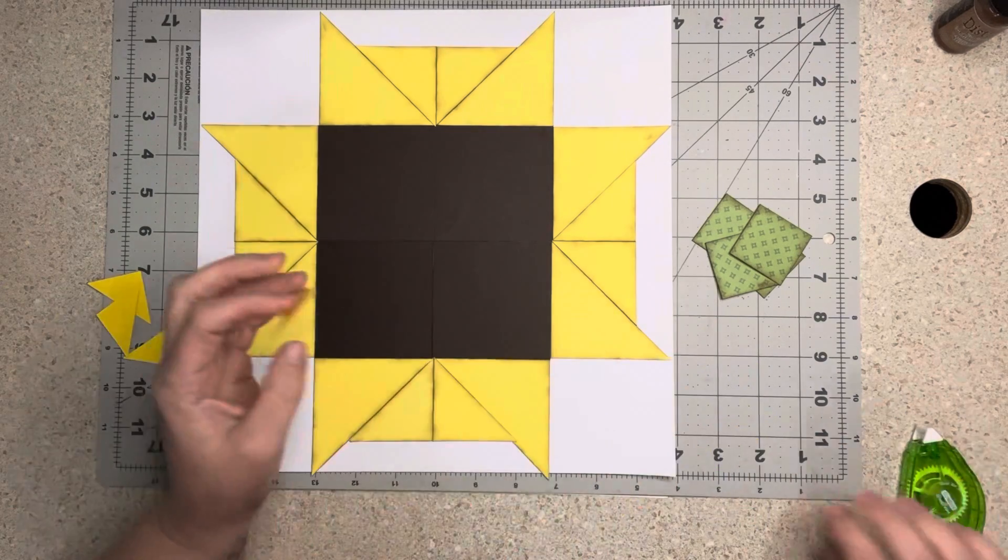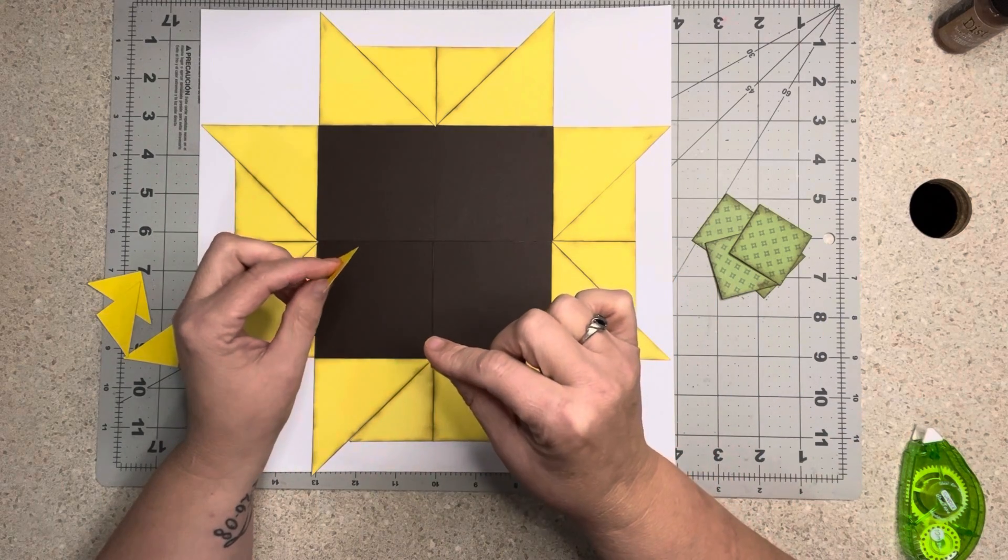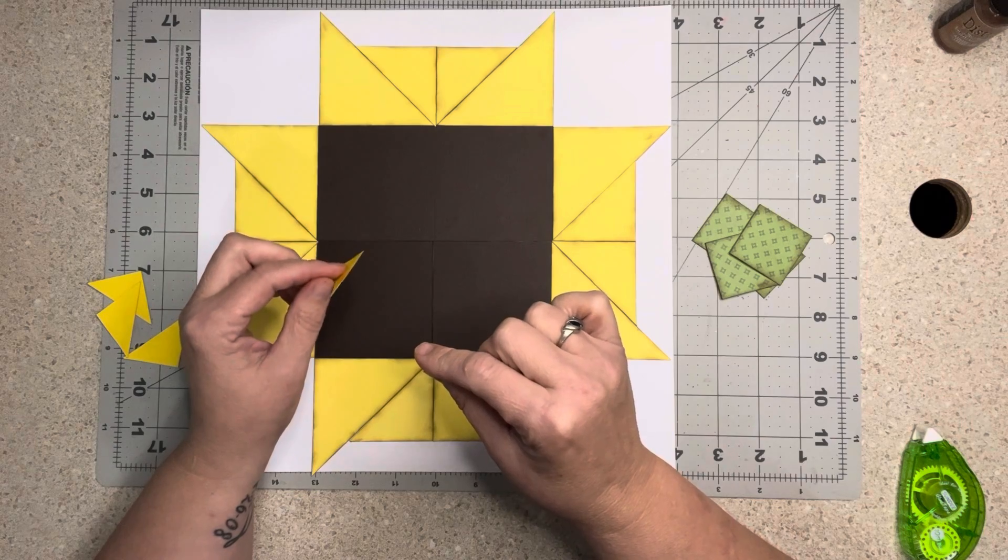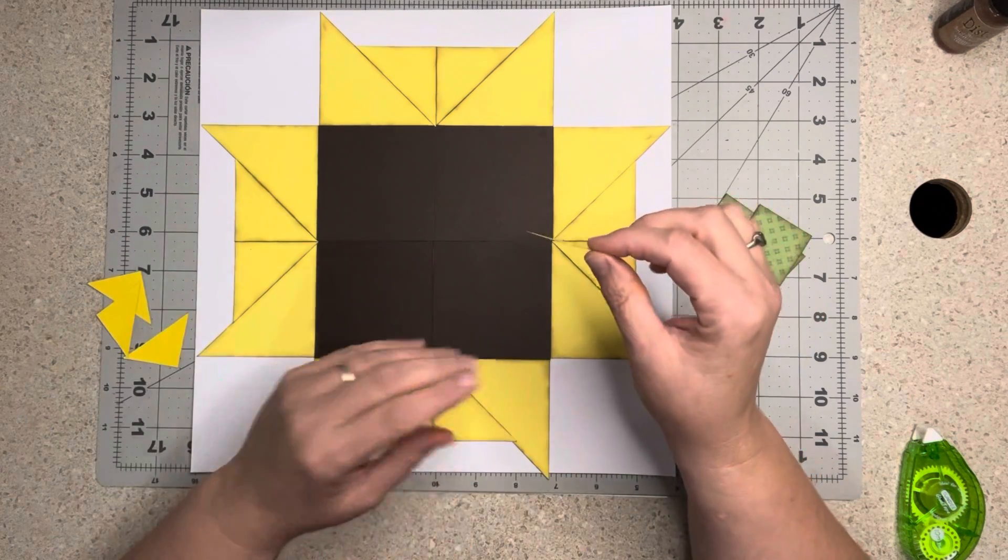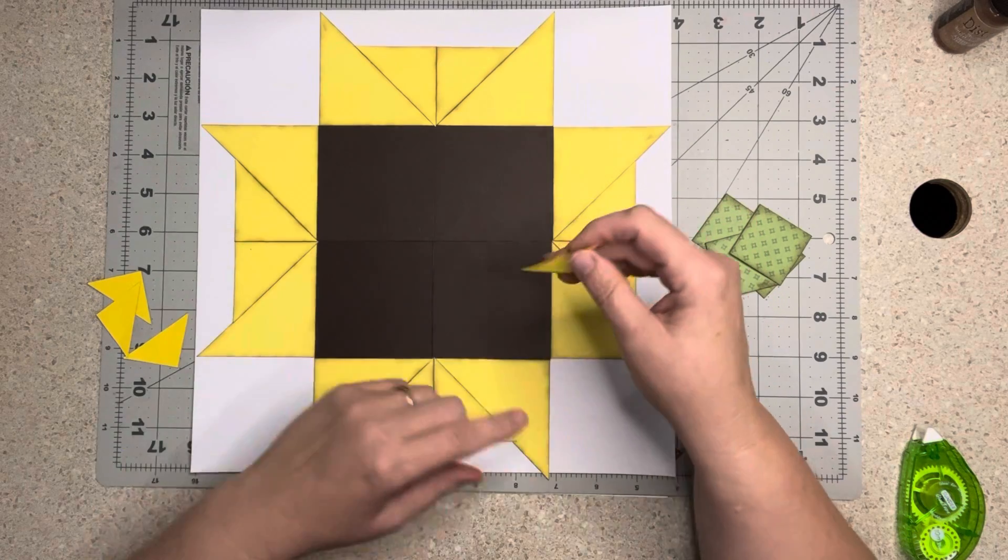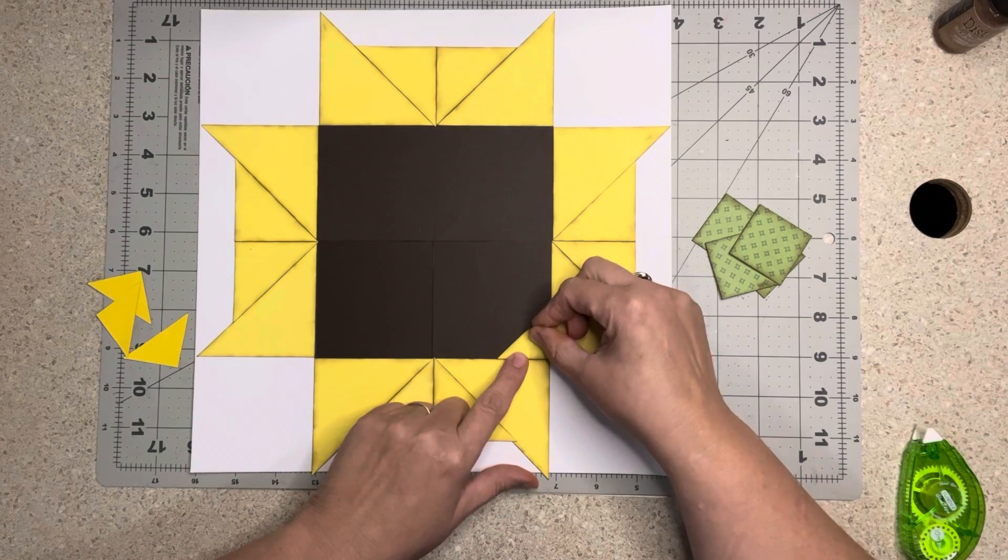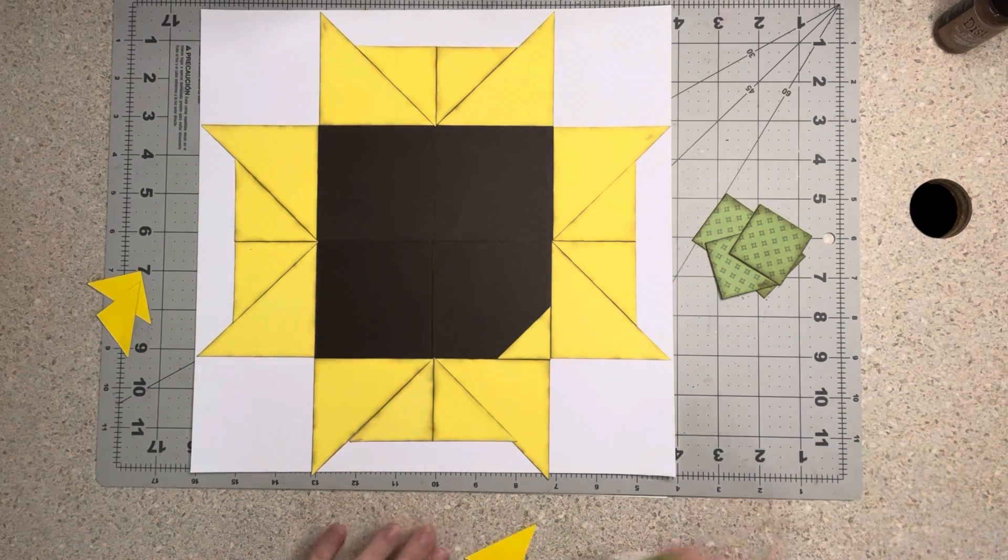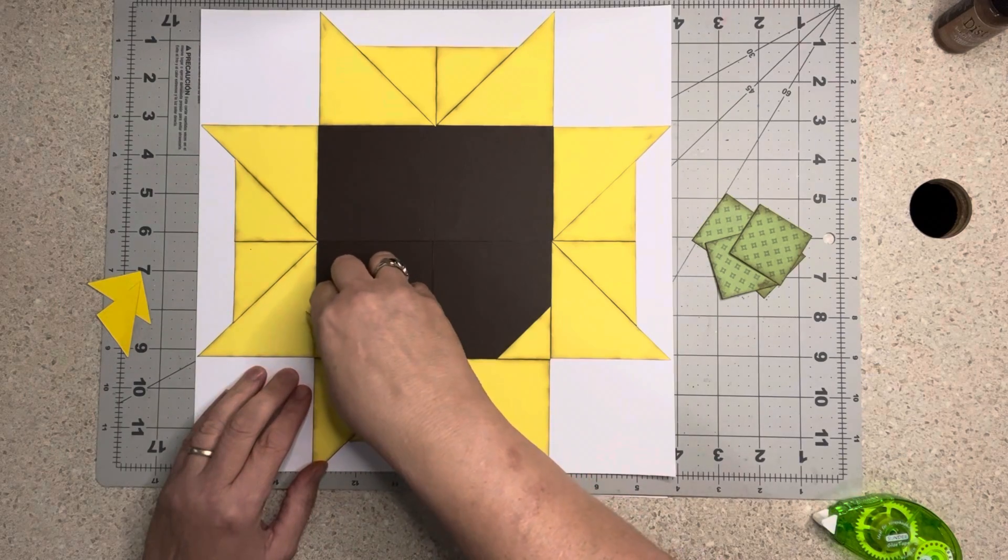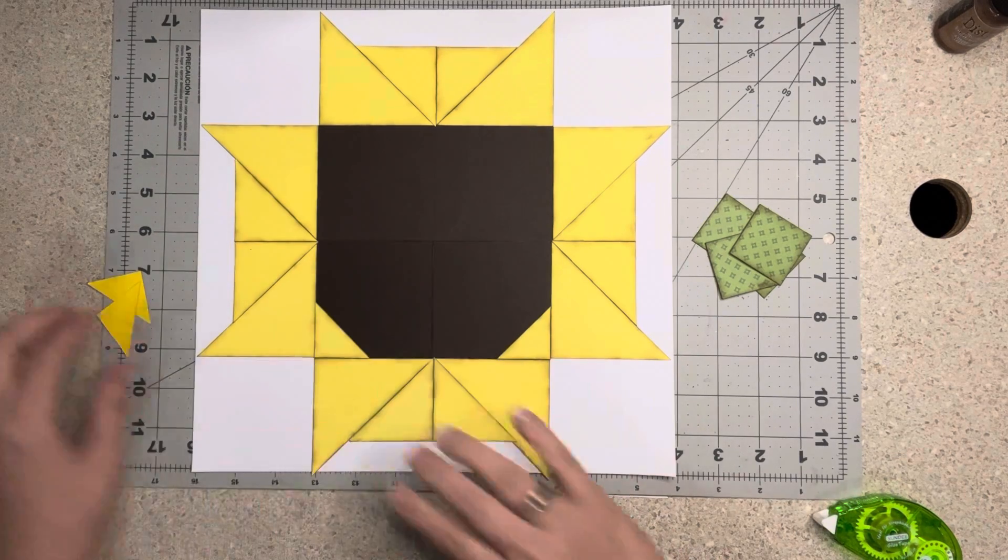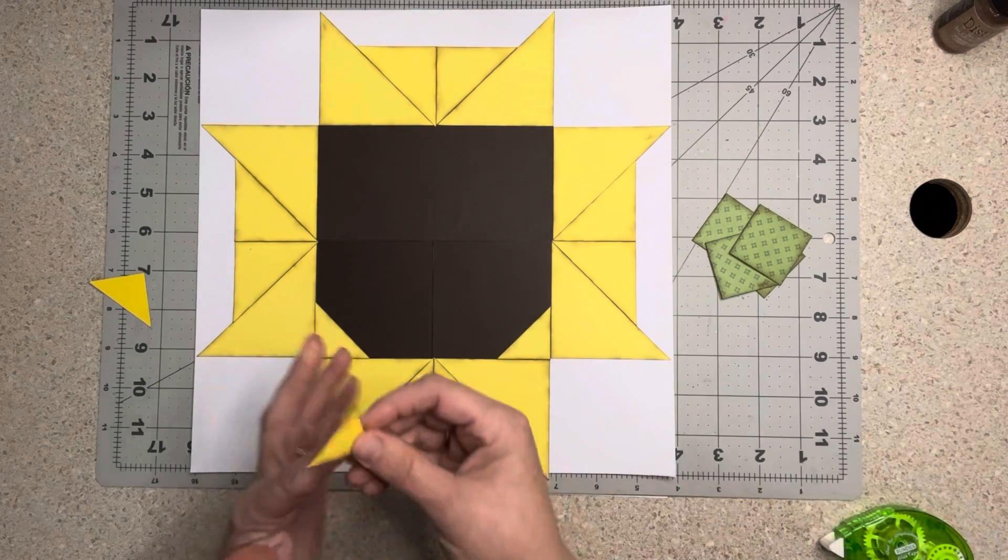Now you're going to take a two by two square. Let me make sure I have this right. Two inch square. And you're going to cut it in half twice. So cut the square in half, then cut that triangle in half. And that is going to be the inside right here. We're going to do that on each block. Starting to look like a flower.